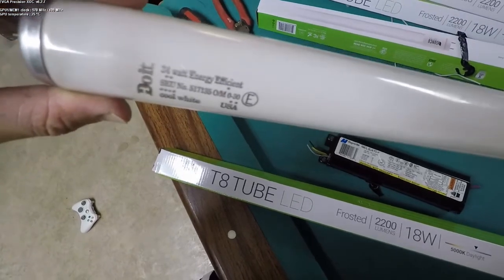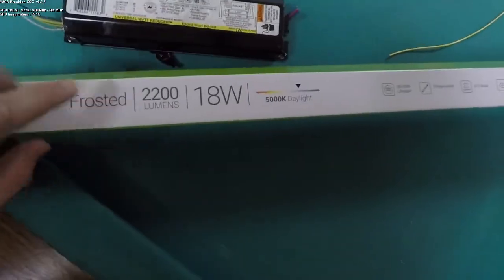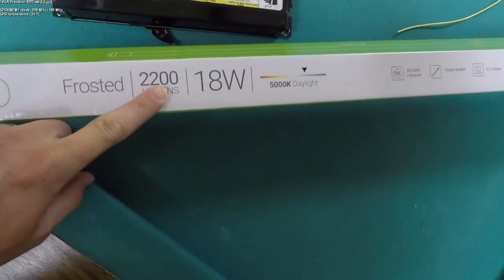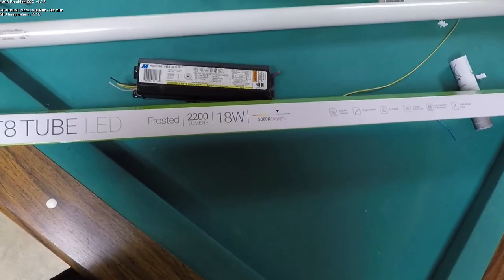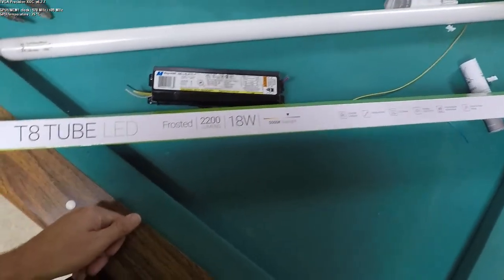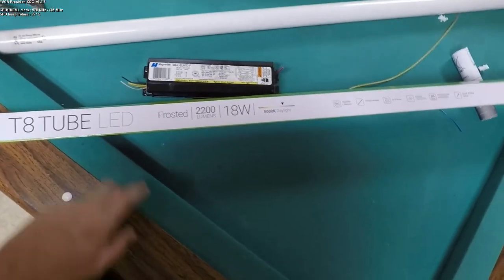That fluorescent bulb is rated at 34 watts. This LED bulb is rated at 18 watts. So quite a bit of savings in power, but also I just like the light output of these better.